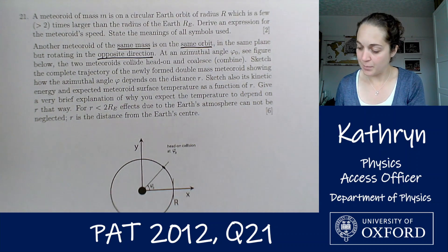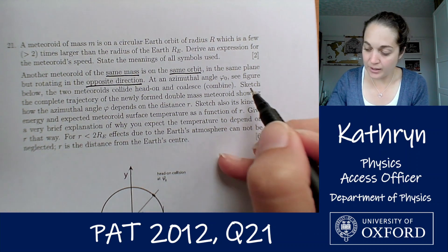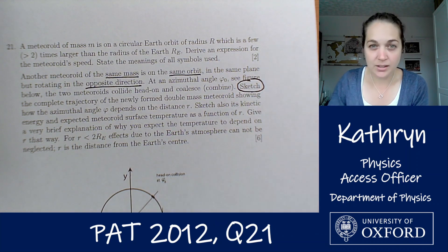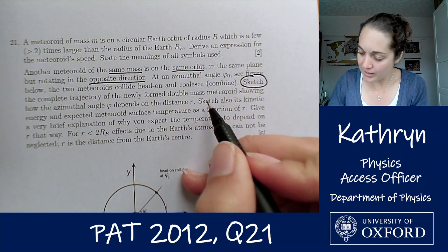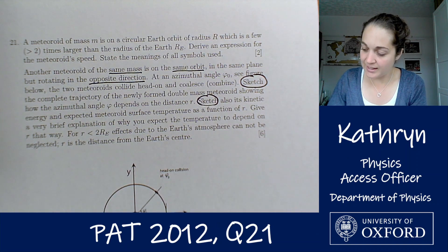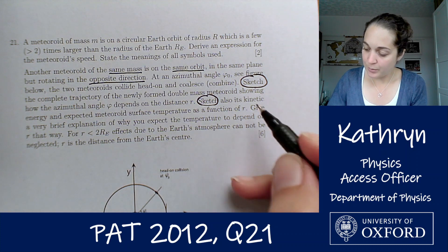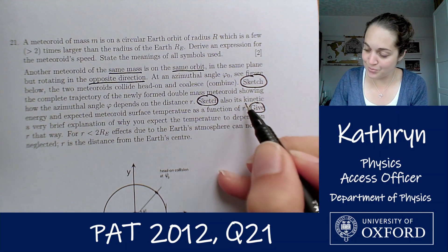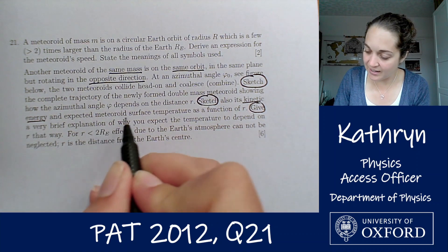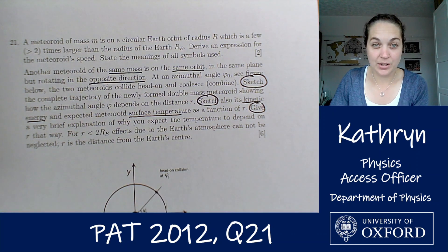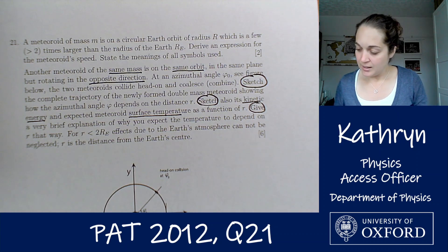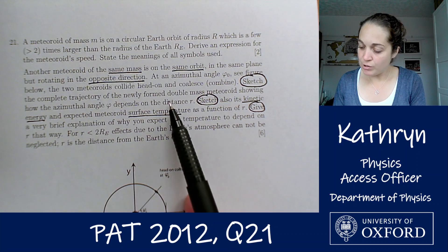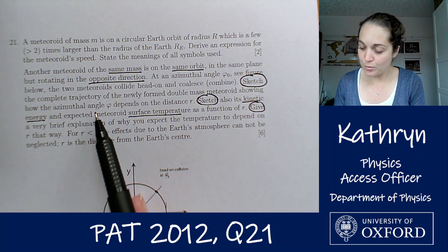Let's split this up into the different parts: we need to sketch the complete trajectory showing how azimuthal angle depends on distance r; sketch the kinetic energy and expected surface temperature; and give a very brief explanation. So we've got three sketches and some explanation. Let's start by sketching the trajectory of the newly formed double-mass meteoroid, showing how the azimuthal angle depends on distance r.